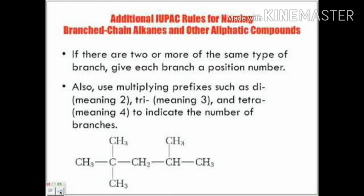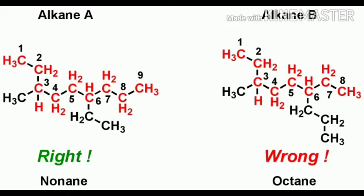Repeating the IUPAC rule: if there are two or more of the same type of branch, give each branch a position number. Also use multiplying prefixes such as di, tri, tetra to indicate the number of branches.